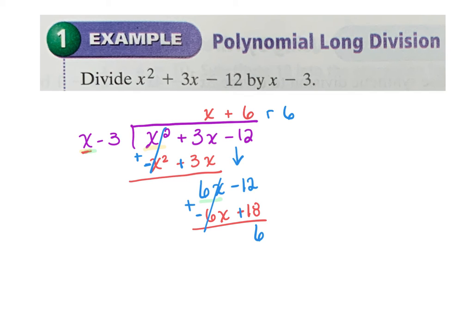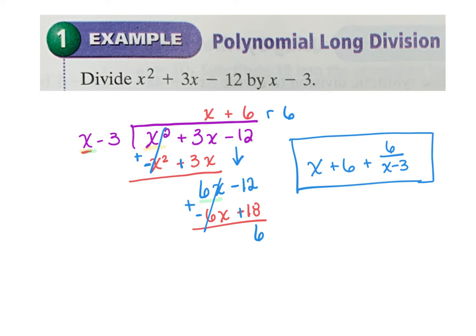The remainder is 6. Throughout the rest of the chapter you'll write the answer just like a mixed number in long division: the answer is x + 6, and then the remainder 6 is written over the divisor, giving x + 6 + 6/(x − 3). That polynomial divided by x − 3 is x + 6 + 6/(x − 3). Since the remainder was 6 — not 0 — x − 3 is not a factor.